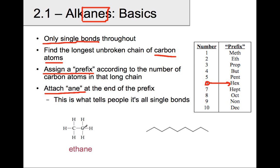This 2-carbon chain down at the bottom — 2 carbons, eth — is ethane. And this chain, which is 1, 2, 3, 4, 5, 6, 7, 8, 9 carbons long, should be nonane. And it is.